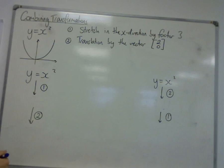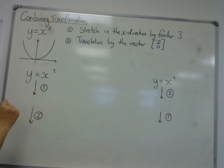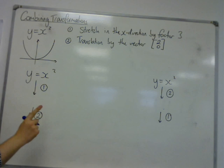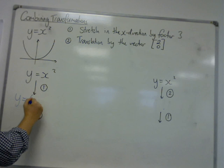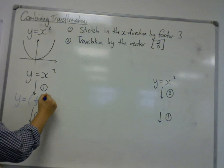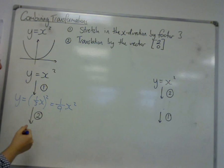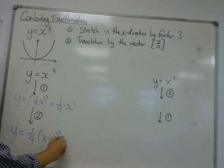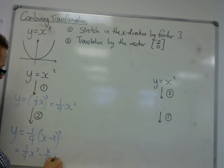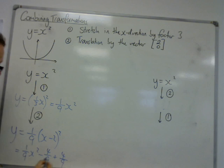So, first of all, applying the stretch in the x direction by factor of 3. So x gets replaced with 1 third x. So we have 1 over 9 x squared. Then I apply the translation. So y equals 1 over 9 (x minus 2) all squared. Which is 1 ninth x squared minus 4 ninths x plus 4 ninths.